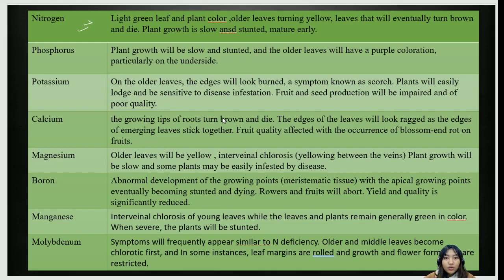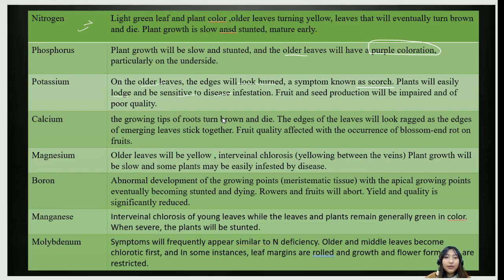For phosphorus, plant growth is slow and stunted, and the older leaves have purple discoloration. Whenever you see purple discoloration, it is always due to phosphorus. For potassium, the older leaves look burned — this symptom is known as scorch. Plants easily lodge and are sensitive to disease infection, and fruit and seed production will be impaired and of poor quality.